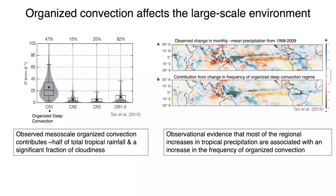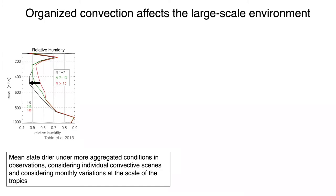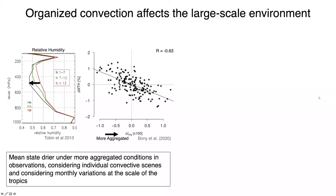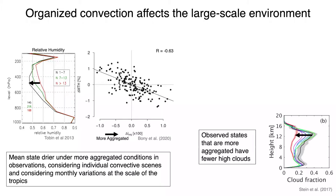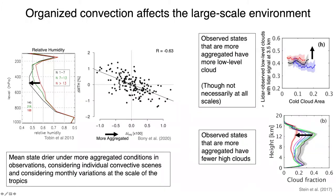Additionally, observations show that most of the regional increases in tropical precipitation are associated with an increase in the frequency of this regime of organized convection. We also find evidence in observations that the mean state under more aggregated conditions is drier, considering both individual convective scenes and monthly variations at the scale of the tropics. On the left panel, going from red to black we move to more aggregated scenes of convection, seeing a drier relative humidity. On the right panel, using a metric of tropics-wide aggregation, as conditions are more aggregated the mid-tropospheric humidity is lower. We also see effects on cloudiness: aggregated states have fewer high clouds and more low-level clouds as aggregation increases.